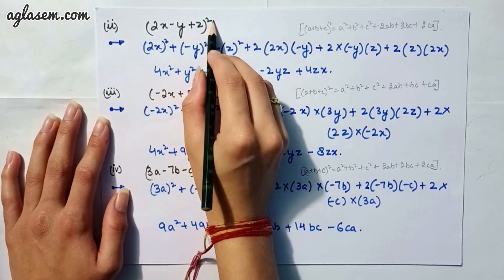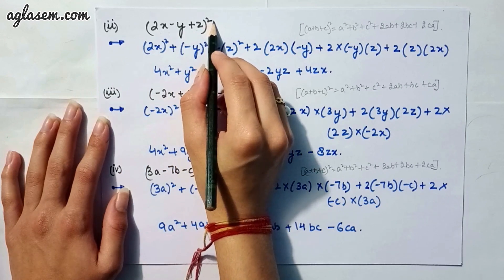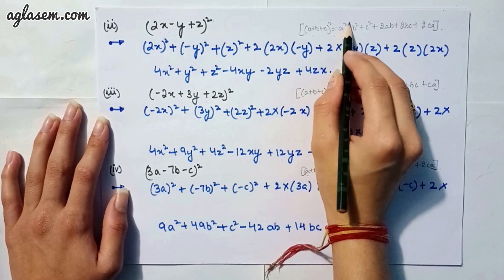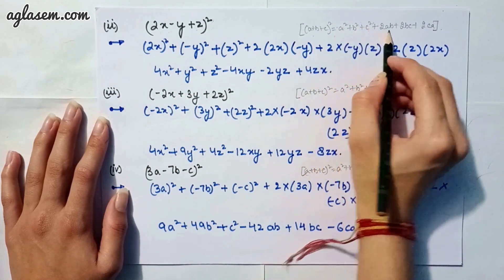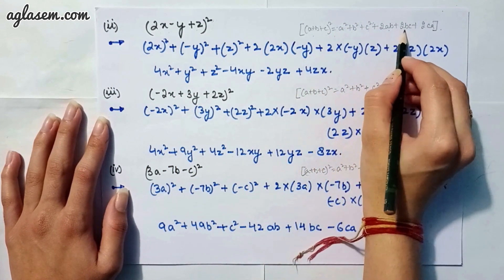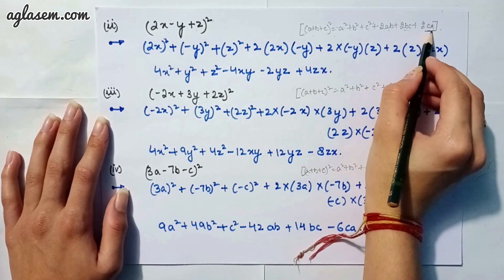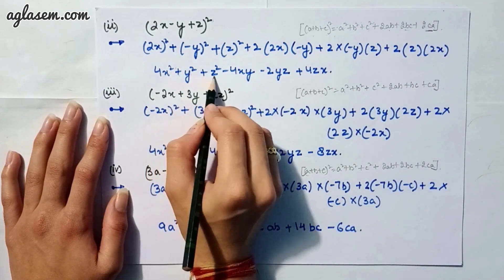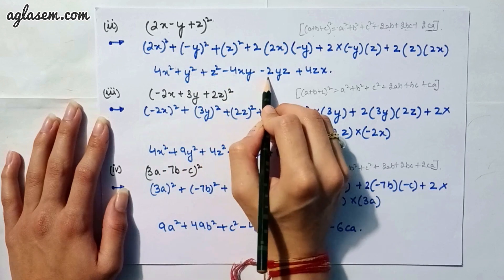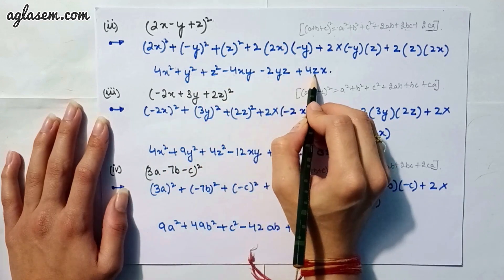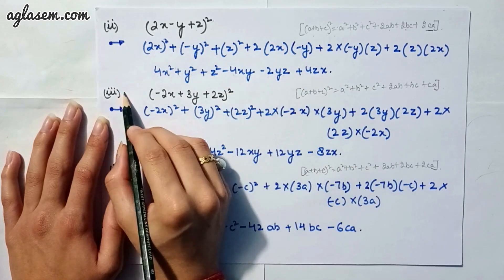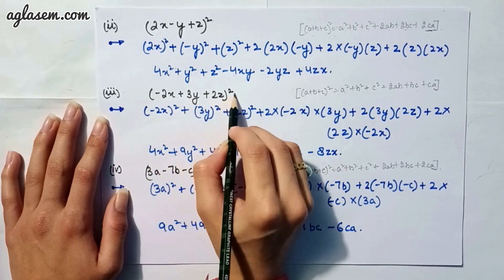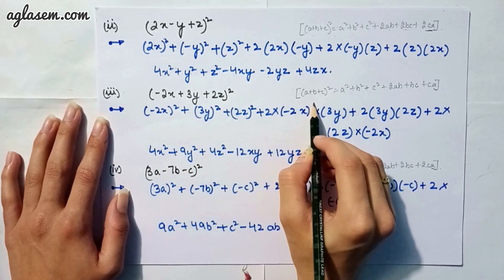Moving to our second part: (2x − y + z)². Applying the same identity (a + b + c)² = a² + b² + c² + 2ab + 2bc + 2ca, we get 4x² + y² + z² − 4xy − 2yz + 4zx.